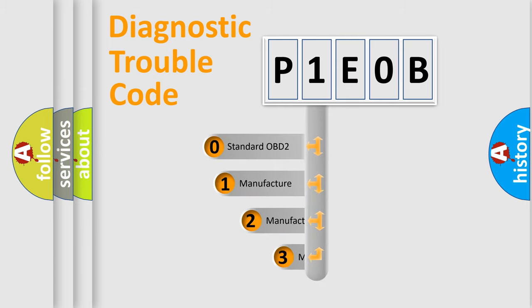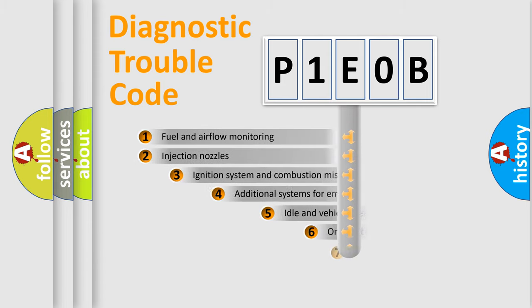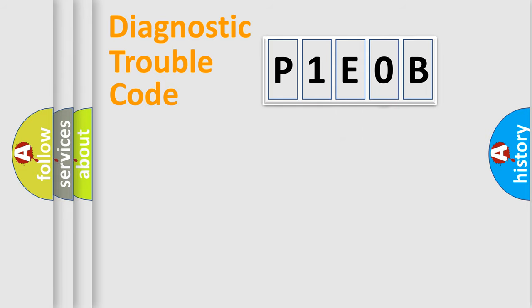If the second character is expressed as zero, it is a standardized error. In the case of numbers 1, 2, or 3, it is a manufacturer-specific expression of the car specific error. The third character specifies a subset of errors. The distribution shown is valid only for the standardized DTC code.